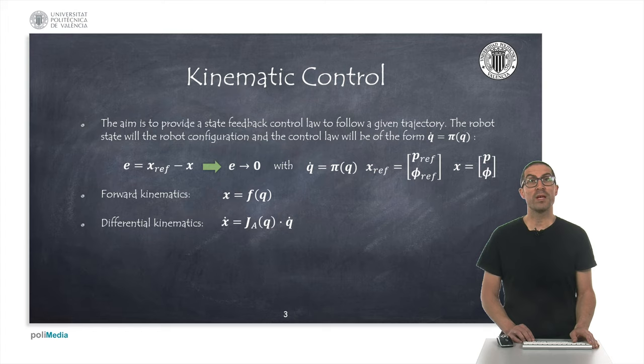More specifically, in this presentation, we will use the analytical Jacobian to compute the velocity of the end effector, a vector containing the linear velocity terms and the angular velocity terms related to Euler angles.